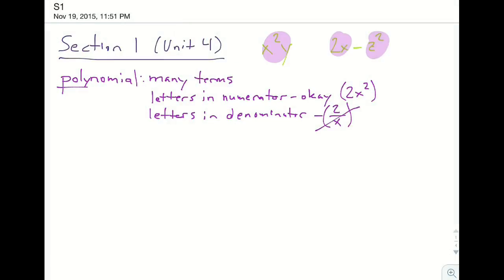Now we're going to move on to some specific types of polynomials that we're going to refer to. I'm just going to write them all out at once: monomial, binomial, and trinomial. So mono, bi, tri.